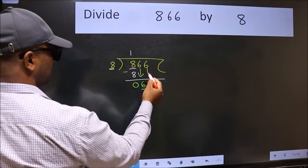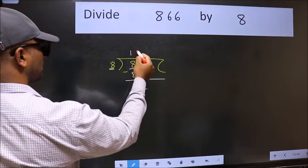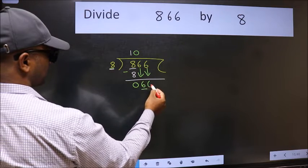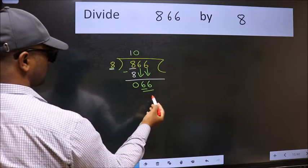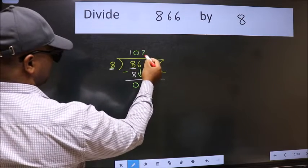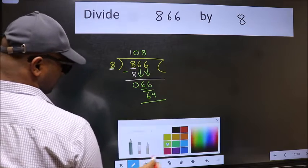The rule to bring down the second number is we should put 0 here, then only we can bring this number down. Now 66. A number close to 66 in the 8 table is 8 times 8 equals 64. Now we subtract.